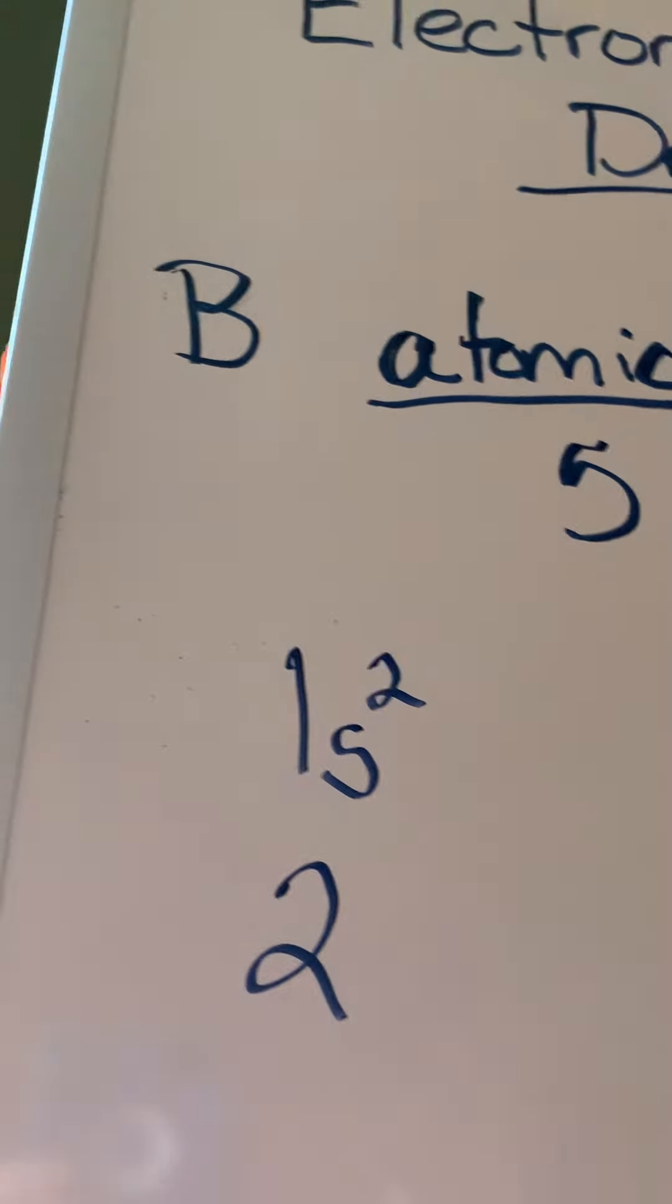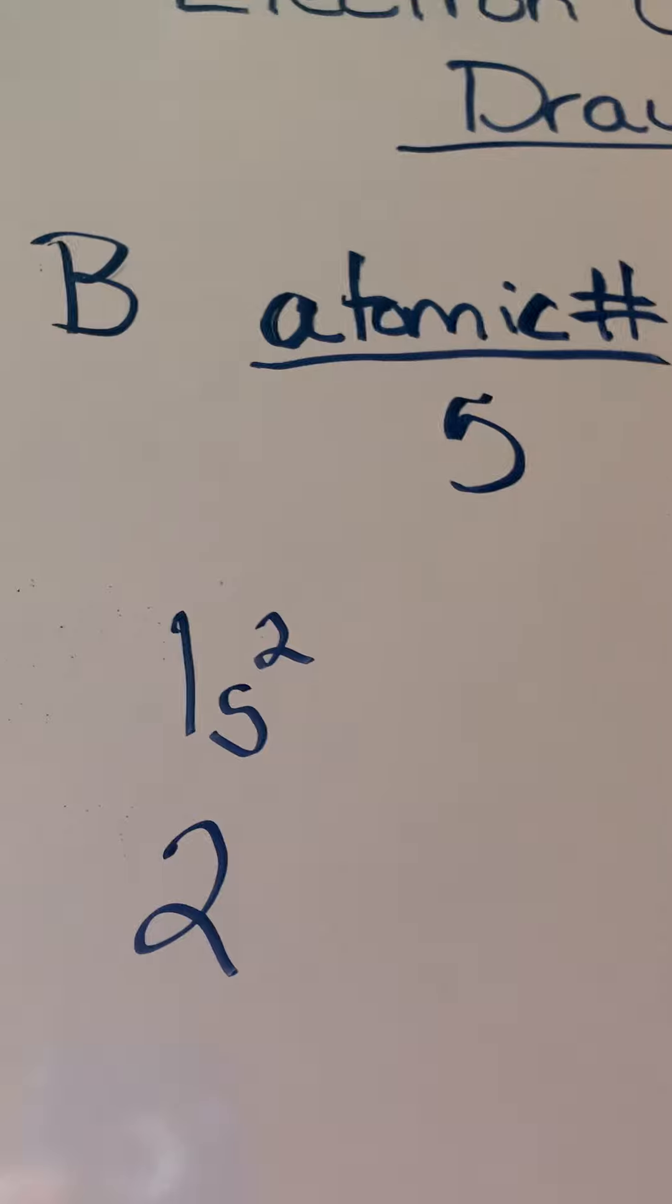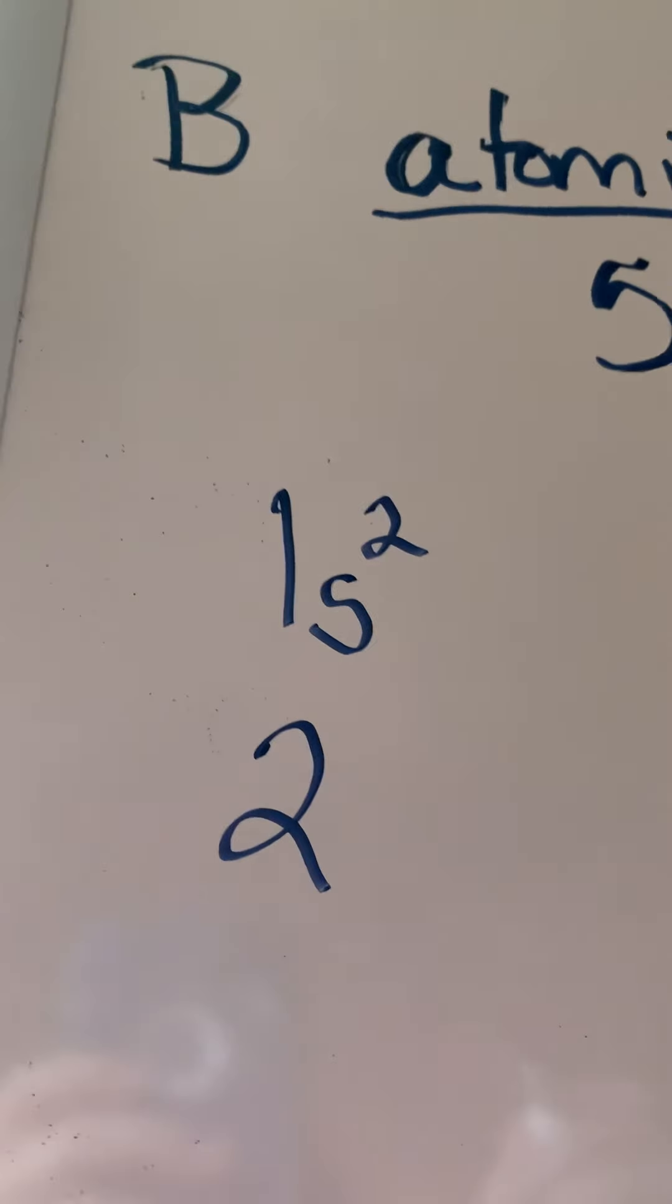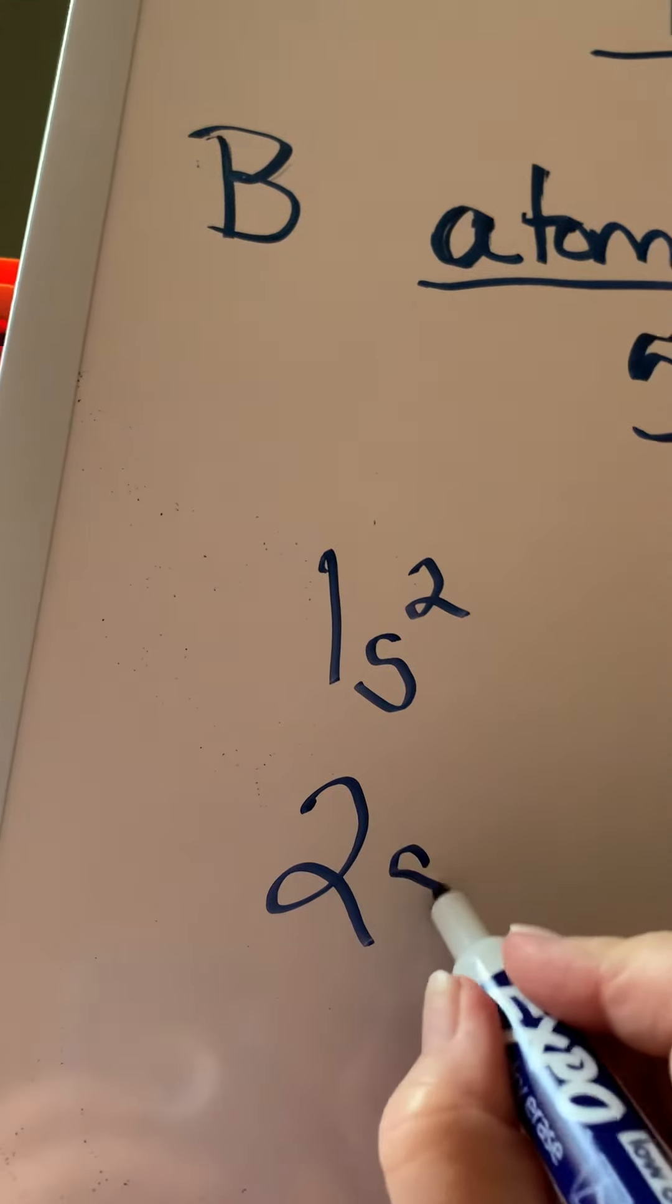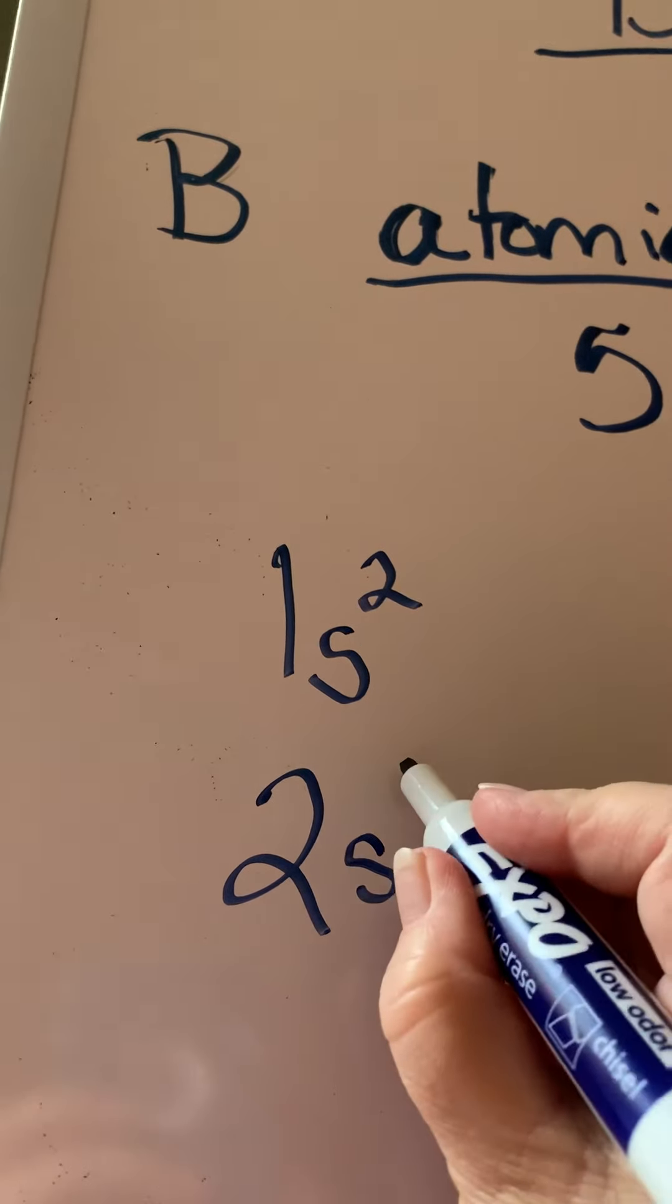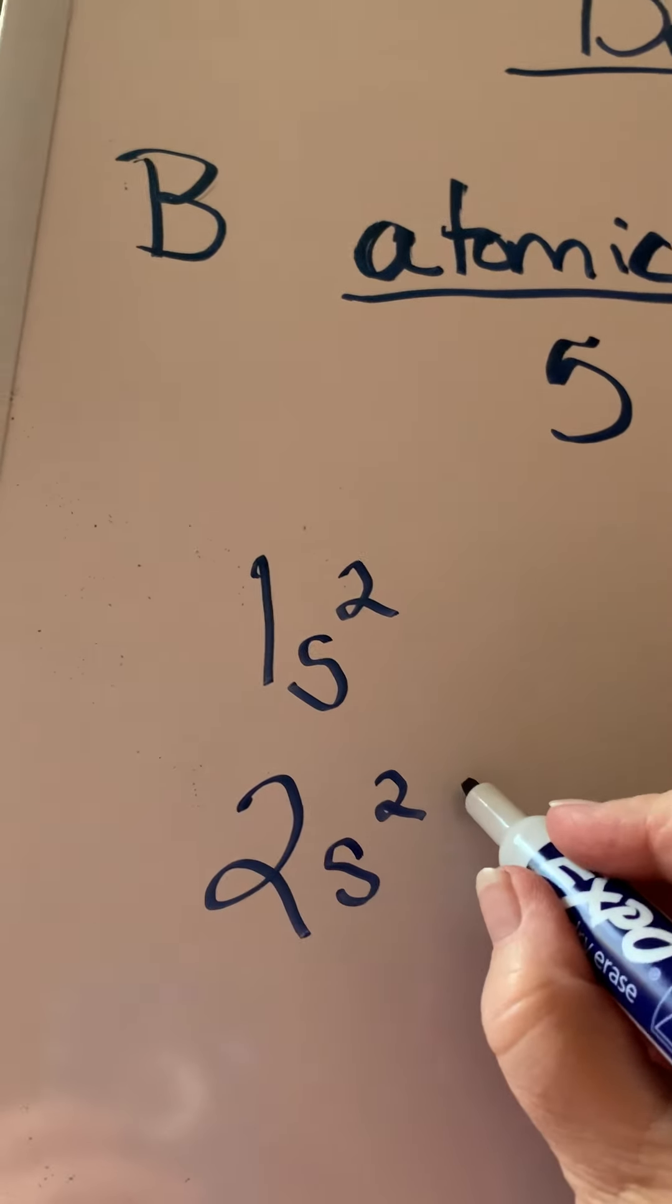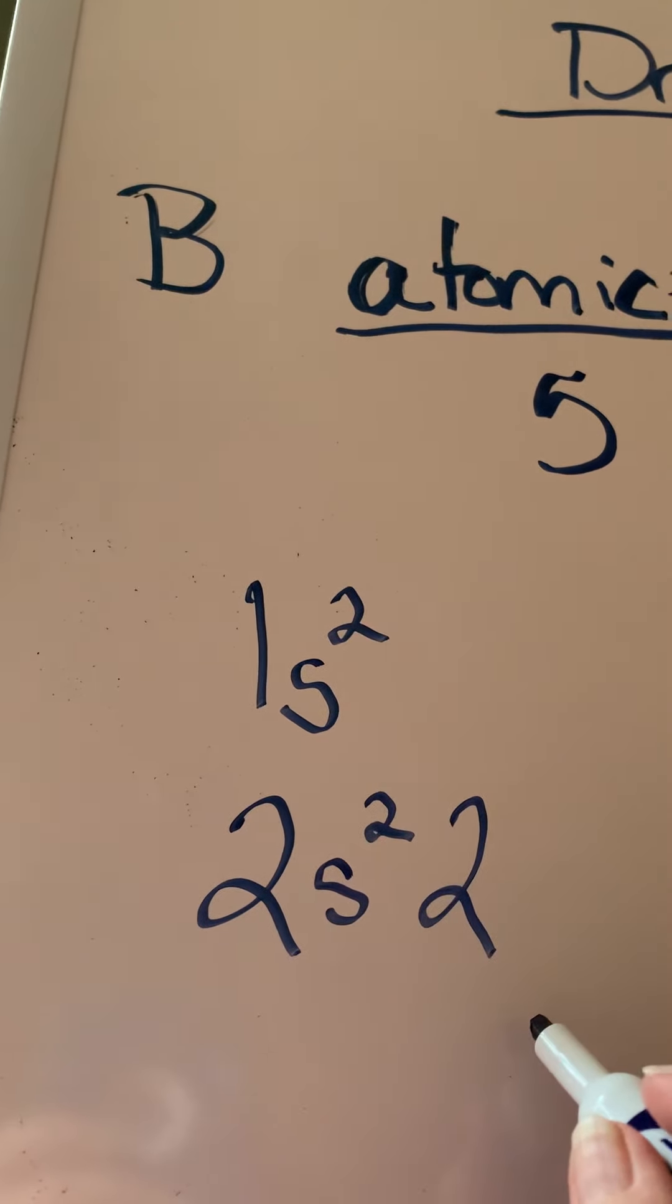Level two. Now this is weird. You're going to think why do I have to write it that way? Because this is what's correct and you have to learn to write it correctly. Level two has sublevel s, which can hold two electrons. Then you're still in sublevel two, so you have to put a large two there. But now you're in sublevel s.